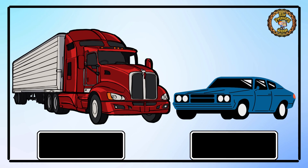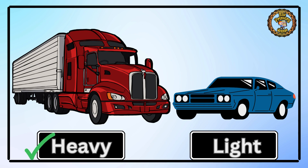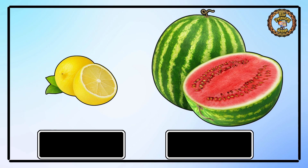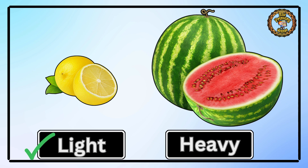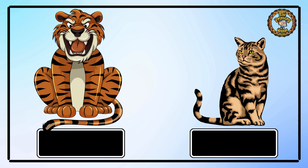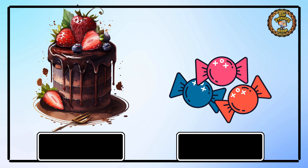Then we have a red shiny truck and a blue car. Which one is heavy? Yes, the red shiny truck is heavier than the car. We have a lemon and a huge juicy watermelon — tell me which one is light? Yes, the lemon is lighter than the watermelon. Then comes the tiger and a cat — which one is heavy? Yes, the tiger is heavy and the cat is light. Then we have a chocolate cake and tiny sweet candies. Tell me which one is light? Yes, the sweet candies are lighter than the chocolate cake.